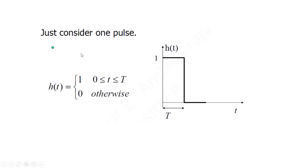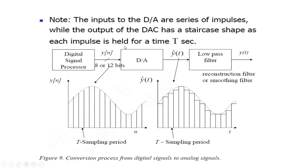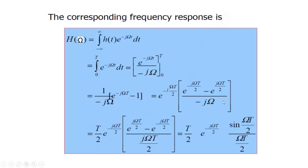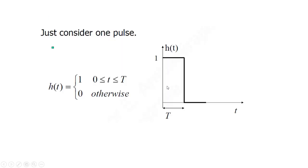Let's try to do the analysis and consider just one pulse out of this staircase voltage output of the D2A converter. This pulse will be defined such that its impulse response is one from zero to T and zero otherwise — this expression is in the time domain for one pulse.